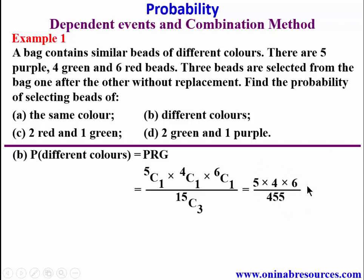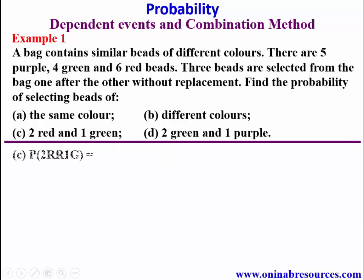Since 5 divides into 455 giving 91, we have 4 times 6 giving 24 over 91. That is the probability of selecting three beads of different colors: 24 over 91.